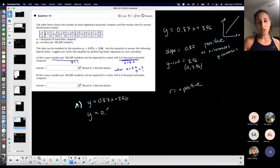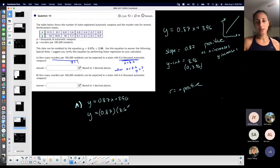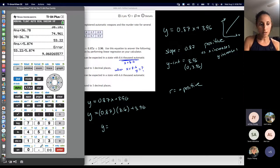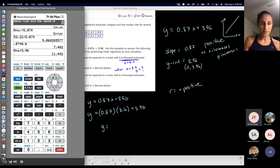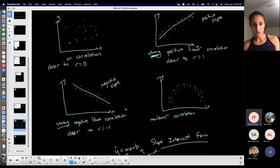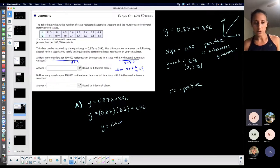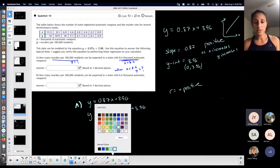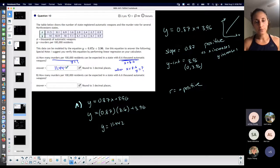I'm just going to plug and chug. My x is 8.6 and I'll just plug it into my calculator: 0.87 times 8.6 plus 3.96, and I get 11.442. It tells me to round to three decimals, that's exactly what I got. So 11.442. We are expecting approximately 11.442 murders per 100,000 residents if there are 8.6 thousand automatic weapons in that particular state.